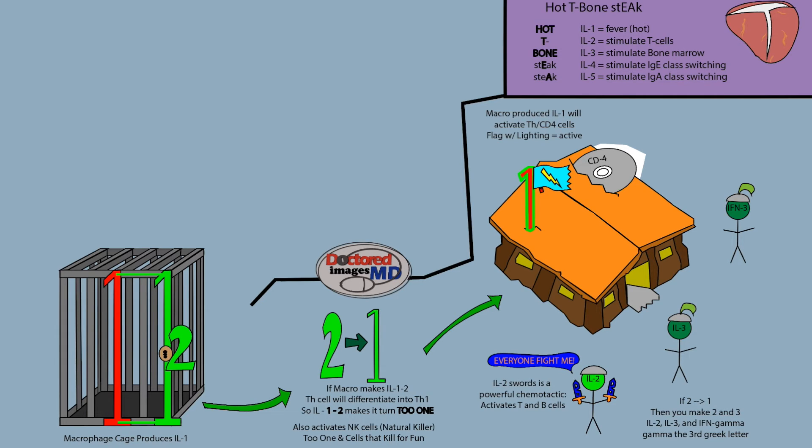So, for the sake of this, we're going to call it IFN-3. TH-1 produces IL-2, IL-3, and IFN-3. Now, to be clear, IFN-3 is not its proper name. It is technically called IFN-gamma, so that is just for the sake of this mnemonic.